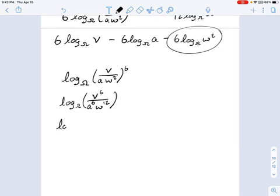And now you can see why this is logarithm base omega of v to the sixth minus, because that a is in the denominator, minus logarithm base omega of a to the sixth minus logarithm base omega of w to the 12th.